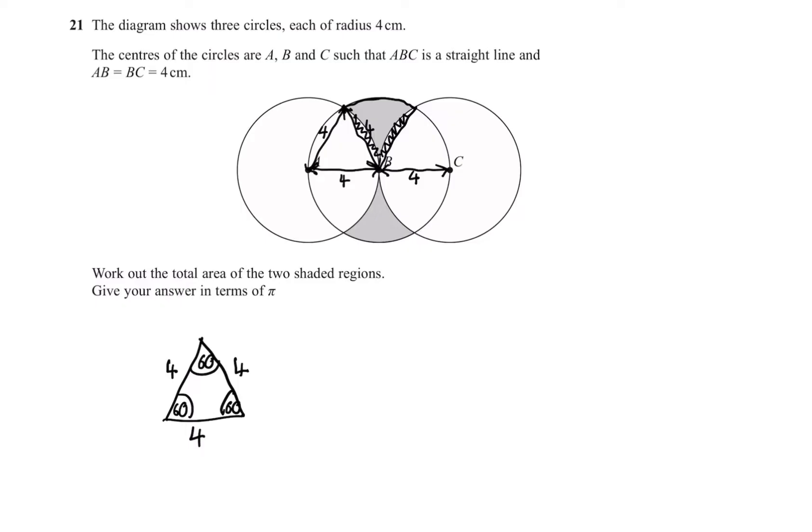Now, how are we going to find the area of one of these segments? So here is the equilateral triangle. If we find the area of this, it is just going to be using half AB sine C and the side lengths that all four. So it's half times four times four times sine of the angle, which is sine of 60.